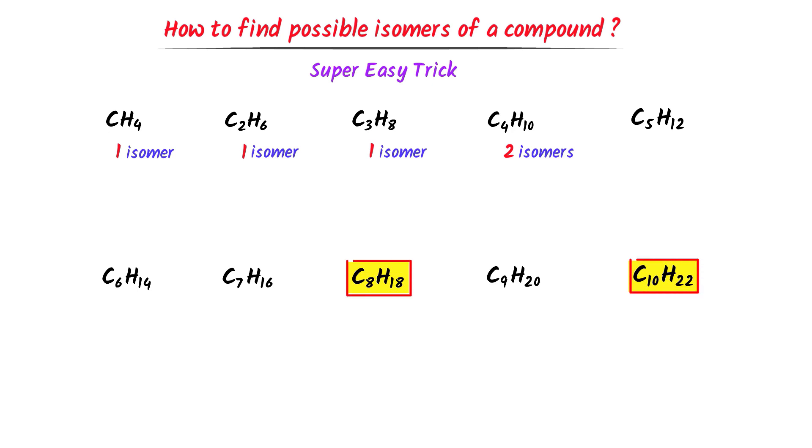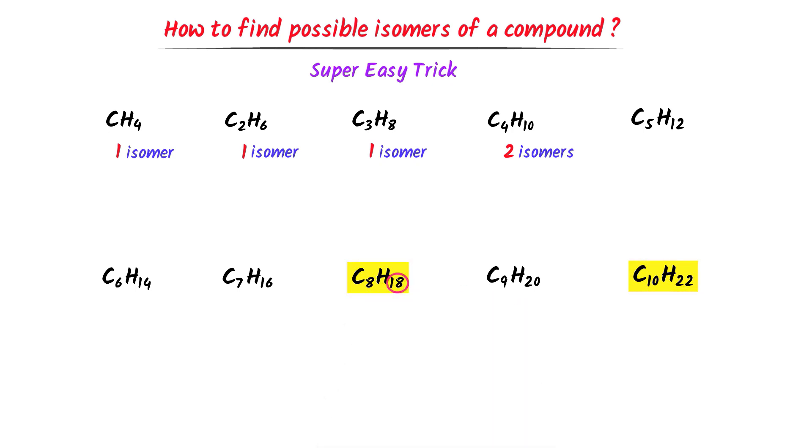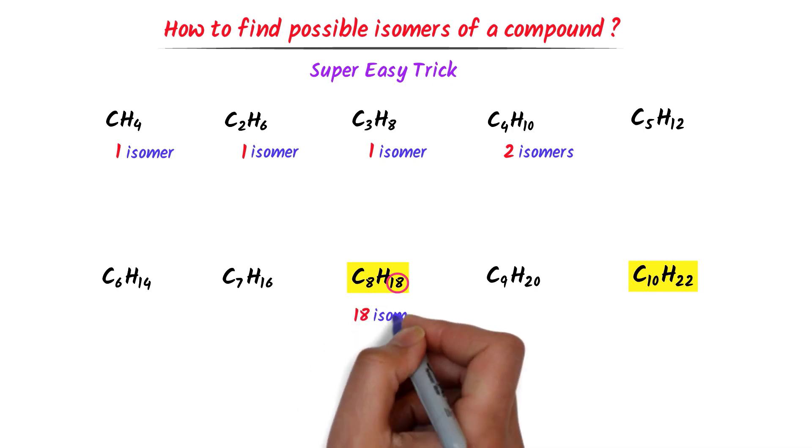Secondly, I highlight octane and decane, because they both are exceptional cases. This 18 and octane reminds me that octane has a total of 18 isomers.